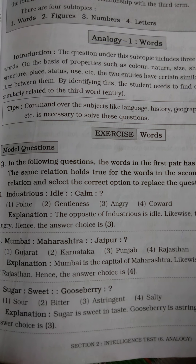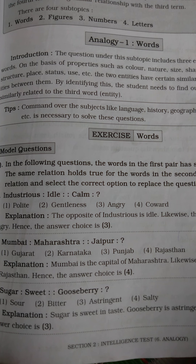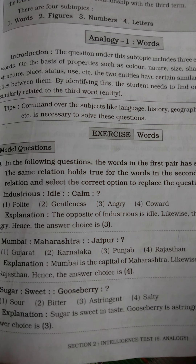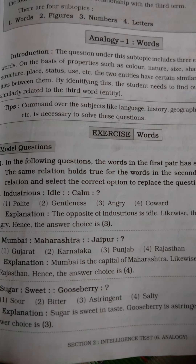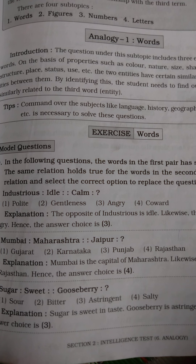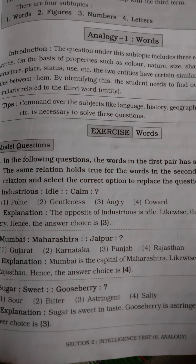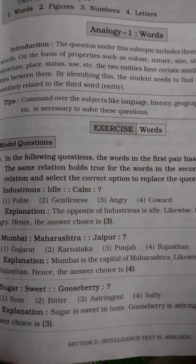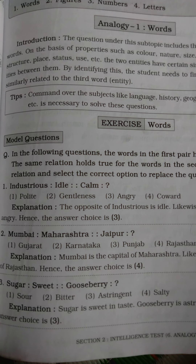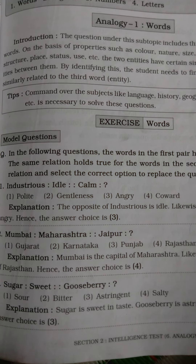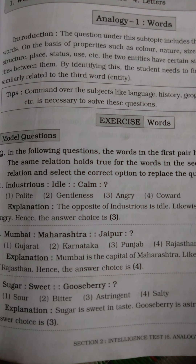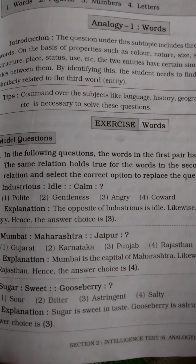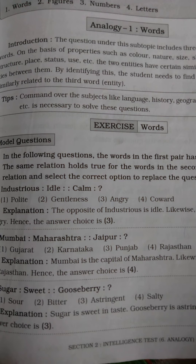Calm means calm, and the opposite word of calm is angry. The other given words are polite, gentleness, and coward — these are similar to calm, but the opposite word of calm is angry. So our answer is choice number three. The next question is: Mumbai : Maharashtra :: Jaipur : ? Mumbai is the capital of Maharashtra, so Jaipur is the capital of Rajasthan. You must know the capitals of all states in India.